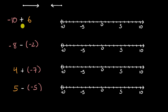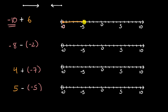Let's start with this first example: negative 10 plus negative six. We're going to start at negative 10 right over here on the number line. We're going to start over there and then we are adding positive six. So we start here and we're going to go six units to the right because it's a positive six — one, two, three, four, five, six. We started at negative 10 and since we're adding positive six, we go six units to the right and we end up right over here at negative four. So this is equal to negative four.